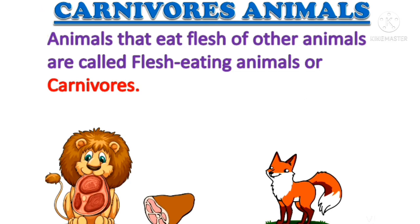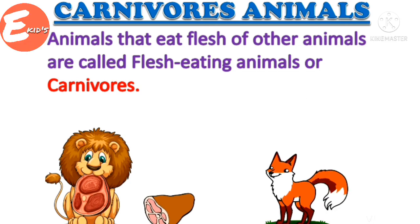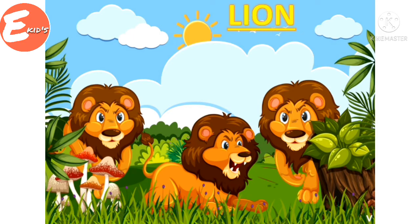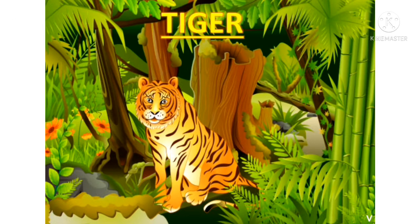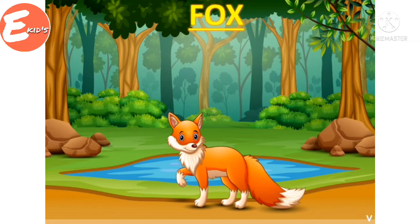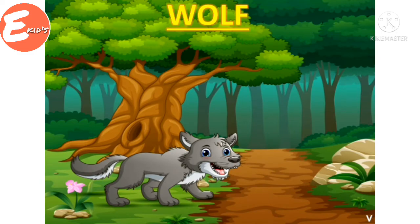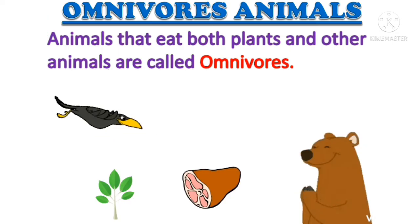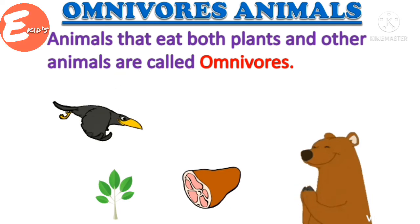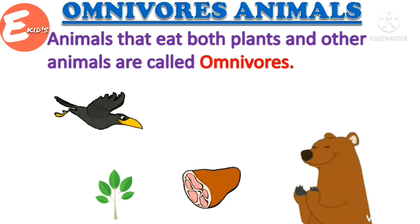Let's see some examples of carnivore animals. Lion, tiger, fox, wolf. Omnivores: animals that eat both plants and other animals are called omnivores.